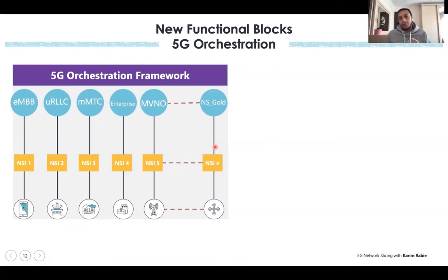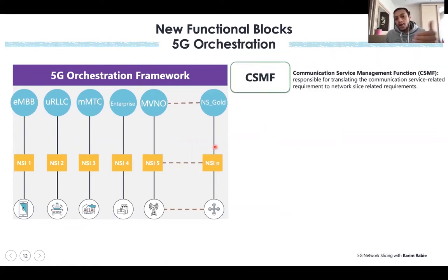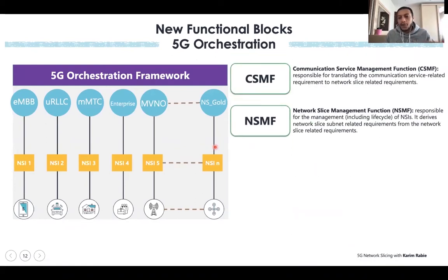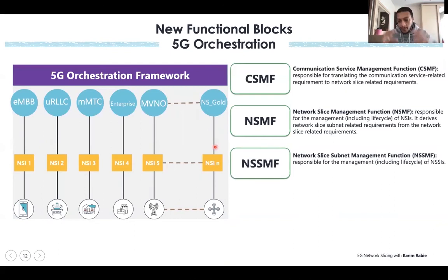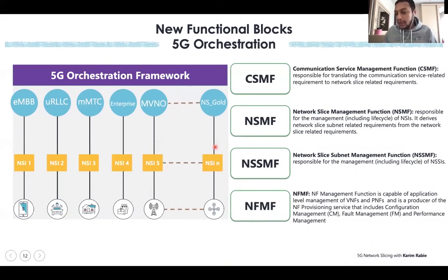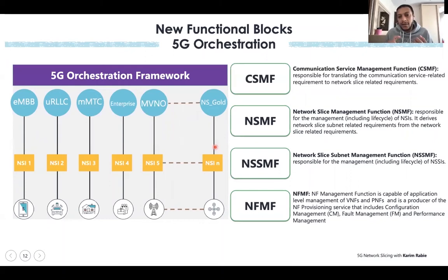For that, new functional blocks came with 3GPP to define the functions needed to cover slicing. They came with CSMF, NSMF, NSSMF, and NFMF.